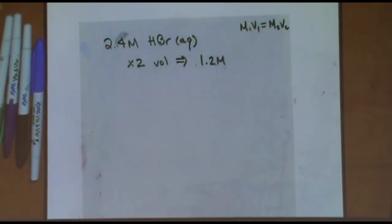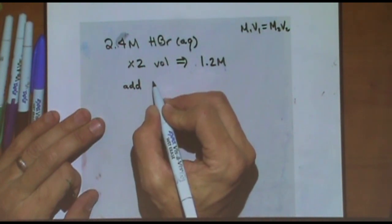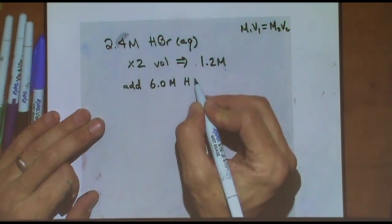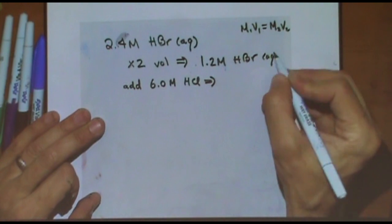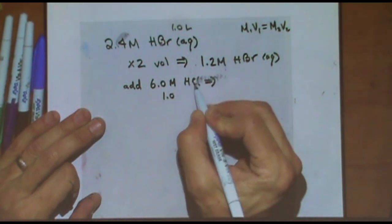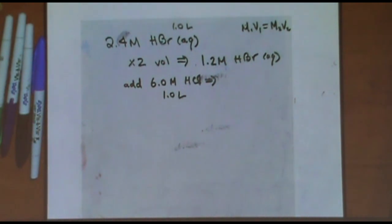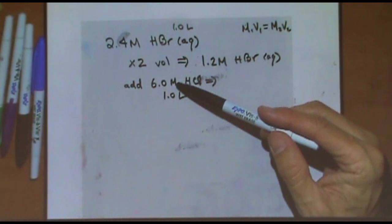Let's try another variation. What if I add 6 molar HCl? Let's say there's one liter of this solution and I add one liter of the HCl. What's the new molarity? So I mixed both of those — what's the new molarity of the HCl? Do you use the 6 in finding the new molarity? No.